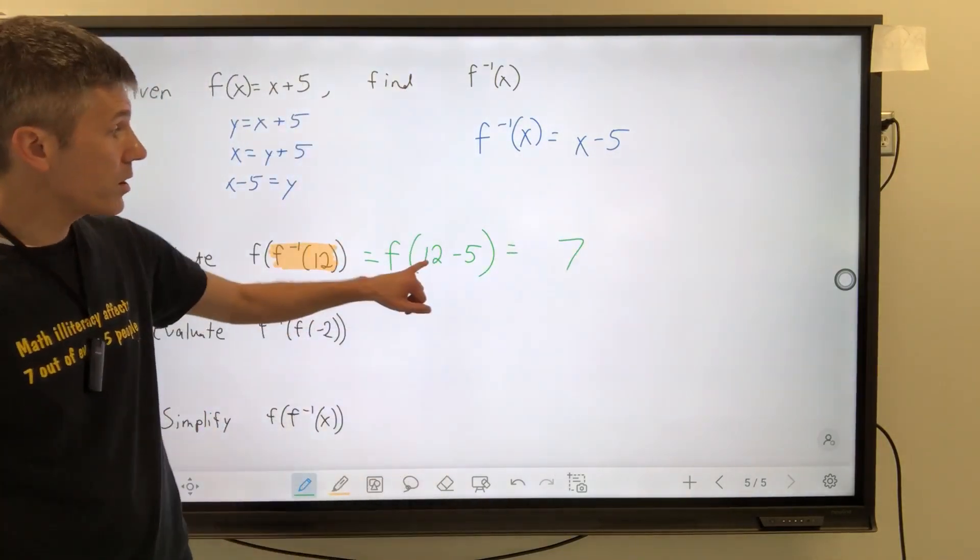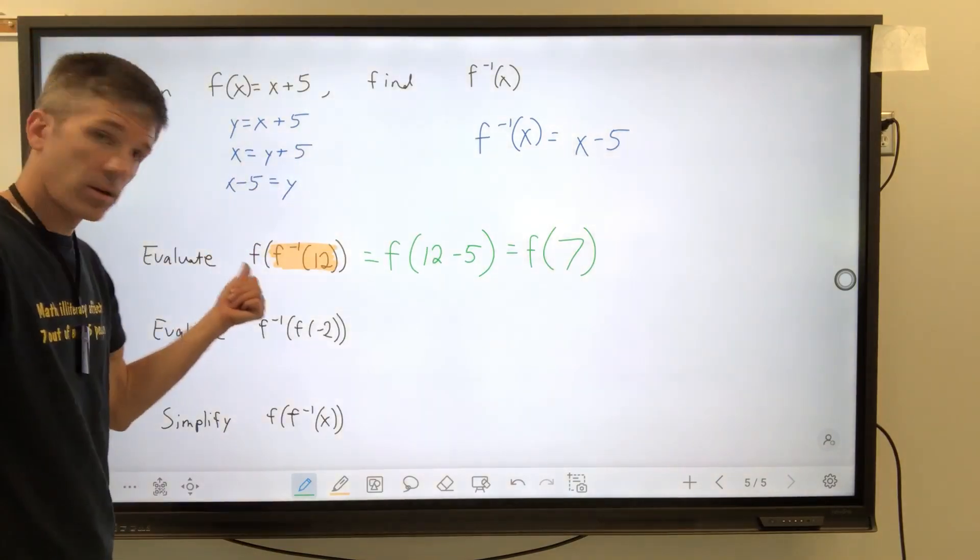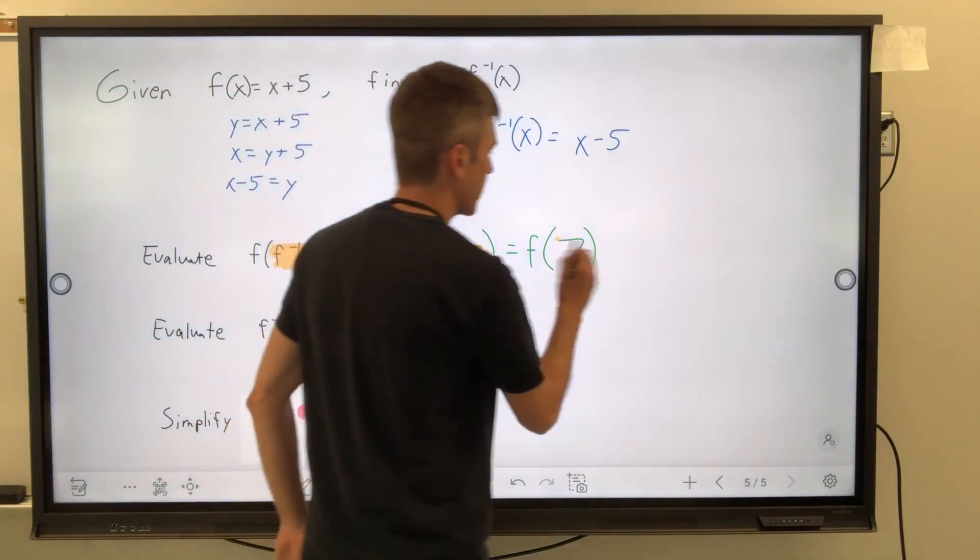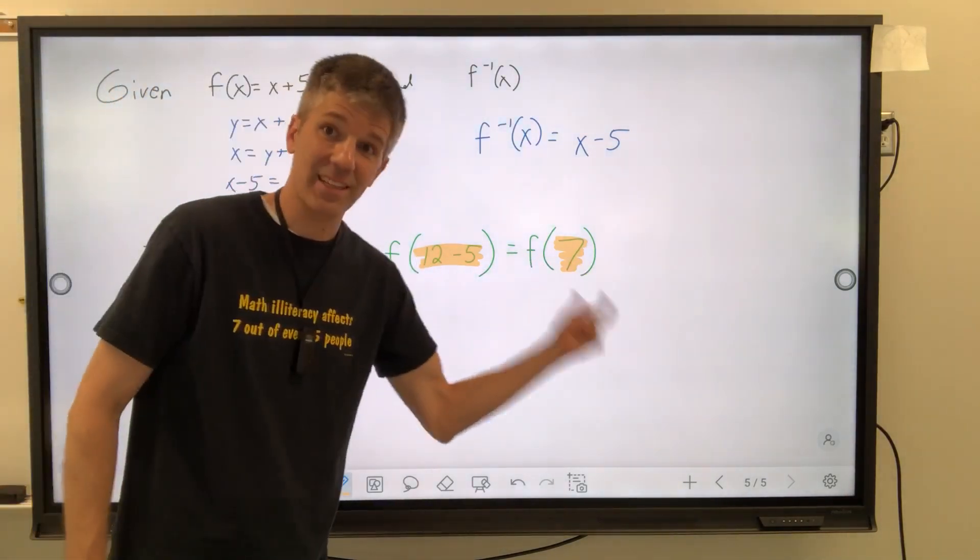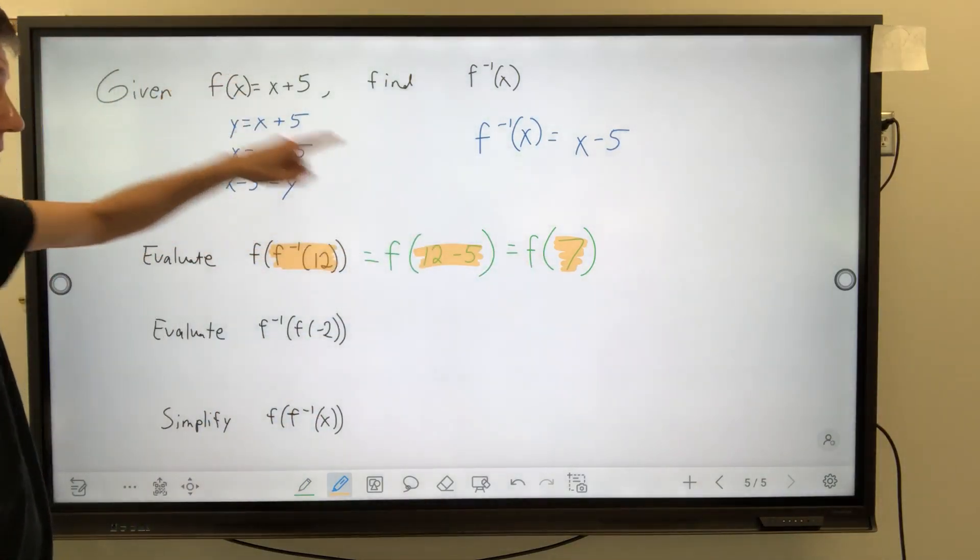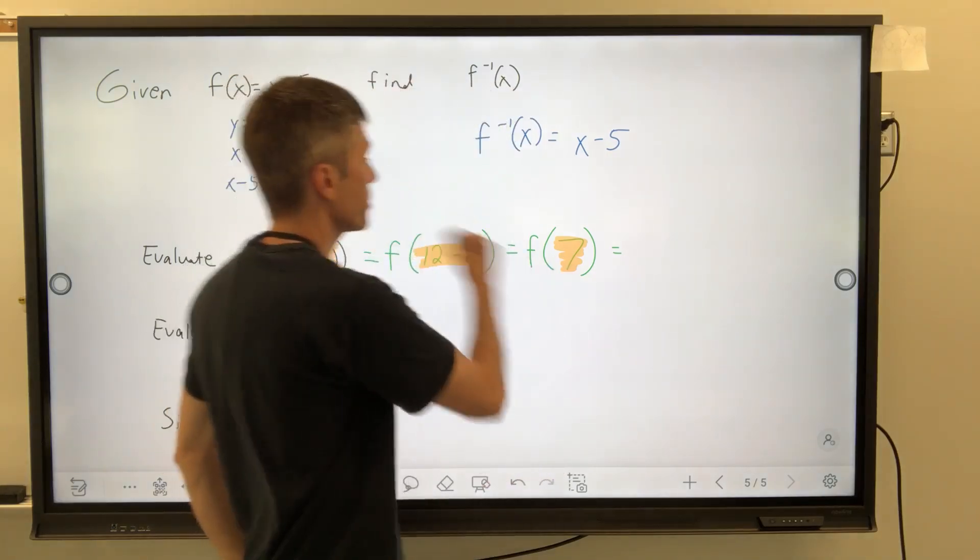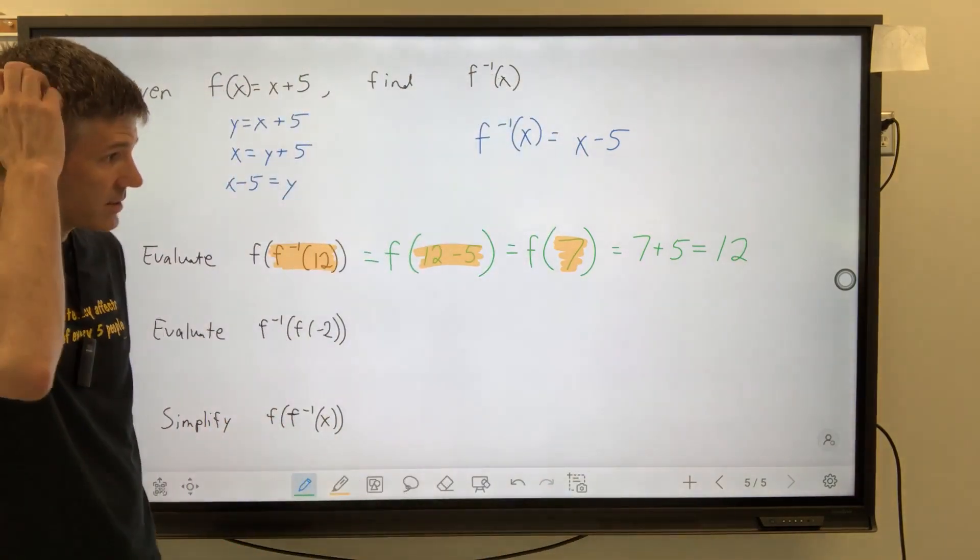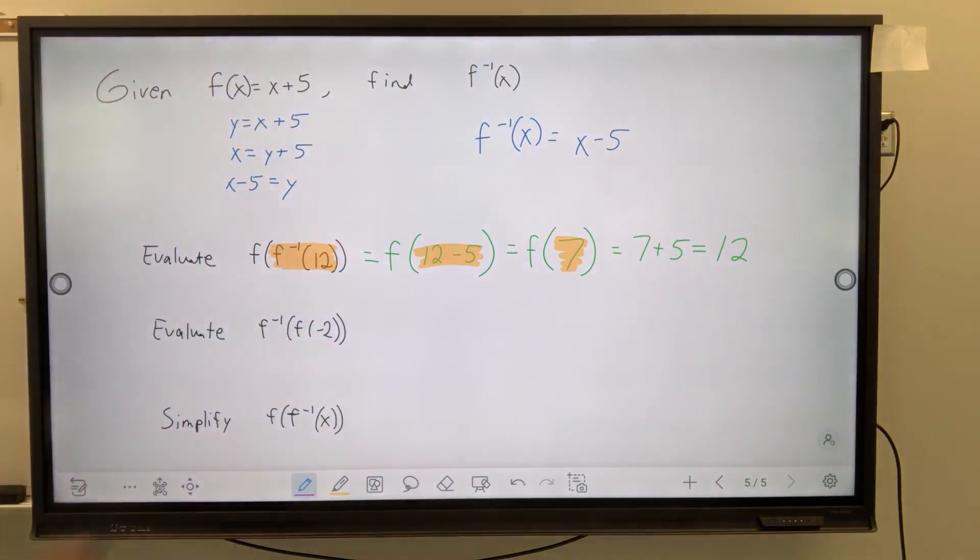Don't let this little exponent of negative 1 make you feel like you have to do something mathematical. Like, I've got to raise it to the negative 1. No, and exponents of negative 1s do fantastic things, but that's not what it means in this notation. What it means is, oh, I'm dealing with that function. So f inverse, that's it right there. So I need 12 minus 5. I have 12 minus 5. Well, nobody is surprised that that is 7.